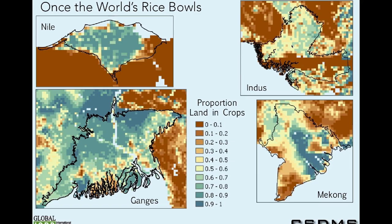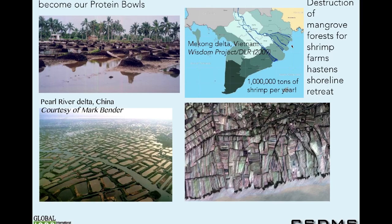Deltas are the rice bowls of the world and have been for a long time. This is a crop map showing the intensification of crops — we've changed them in the last 15 years, probably one of the most unwritten-about stories. We've changed them into protein bowls. We've cut all the mangroves down that would help protect from storm surge from hurricanes or cyclones. We've made all these shrimp farms and fish farms — it's an incredible story.